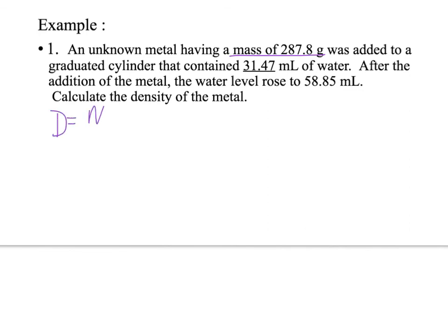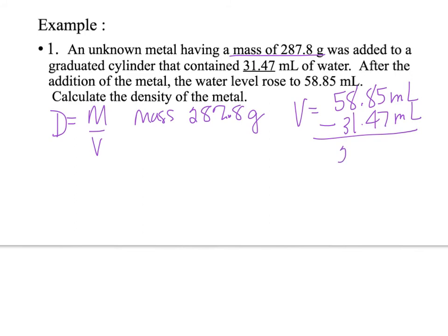So first thing is we're going to write our formula, which is density is equal to m over v, which is mass over volume. We're going to define our terms. We said mass is the 287.8 grams. And then our volume, we have to do a quick little subtraction problem. Because we are adding it to water and the water level rose, we know that this is water displacement. So we're going to get our volume by starting with the 58.85, and we're going to subtract the 31.47, and then we get that our total volume of our object or our piece of metal is 27.38 milliliters.